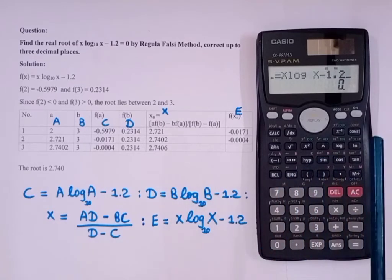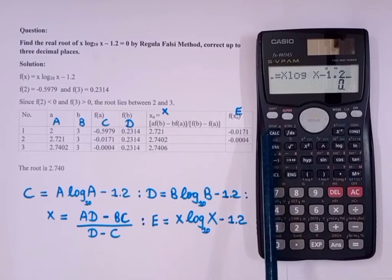And write this: alpha E alpha equals alpha X log alpha X minus 1.2. This is done. The programming is written. Now don't press any other key. Just press this CALC.